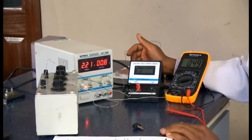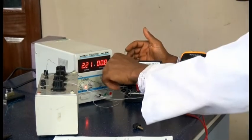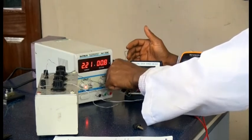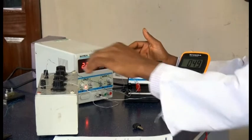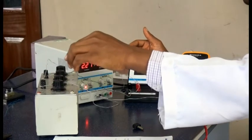The next thing we do now is we leave it at ten volts. Then we vary the resistance box, we start from 100.